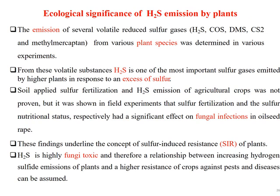The emission of several volatile reduced sulfur gases such as H₂S, COS, DMS, CS₂, and methylmercaptan from various plant species has been determined experimentally. Hydrogen sulfide is one of the most important sulfur gases emitted by higher plants in response to excess sulfur. Field experiments showed that sulfur fertilization and sulfur nutritional status had a significant effect on fungal infections in oilseed rape, underlining the concept of sulfur-induced resistance of plants. Hydrogen sulfide is highly fungitoxic, and therefore a relationship between increasing H₂S emission and higher resistance of crops against pests and disease can be assumed.